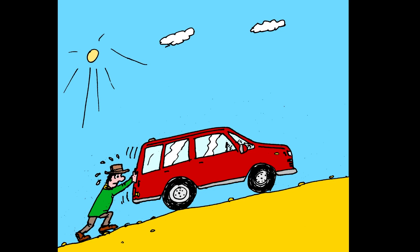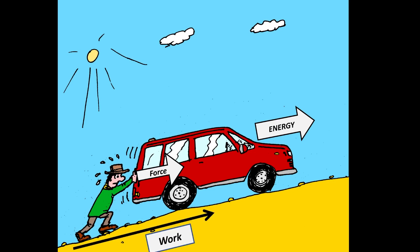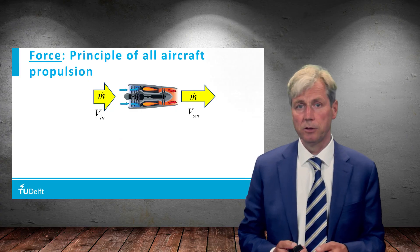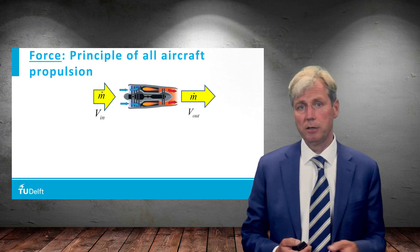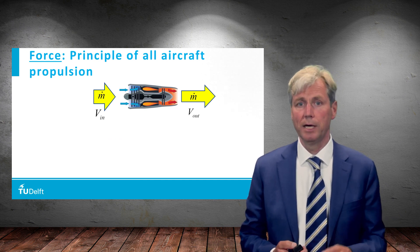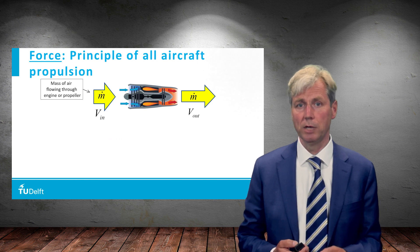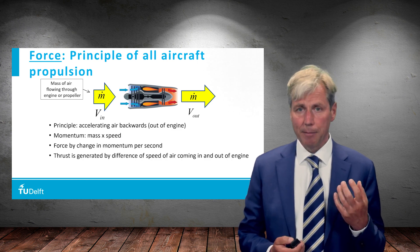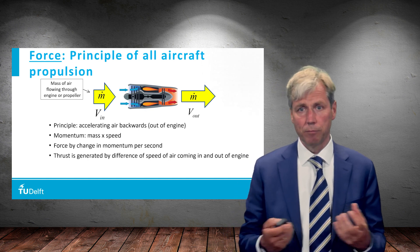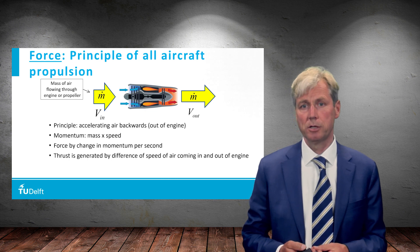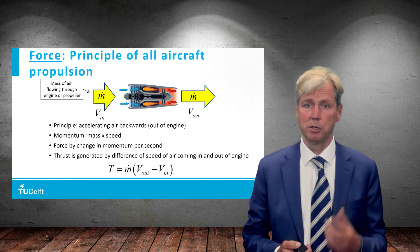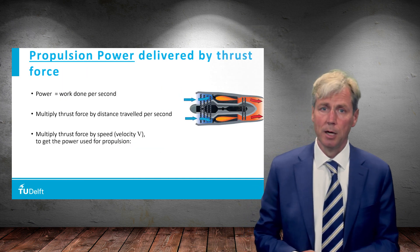Consider a person pushing a car: they exert a force, give the car energy, and over time perform a certain amount of work — power is work per unit time. Applying these concepts to the jet engine: propulsion thrust is generated by accelerating air through the engine. A mass flow — a certain amount of air per second — leaves the engine with a higher speed. By changing momentum (mass times velocity) you create thrust as a reaction. The thrust equals mass flow times the speed difference.